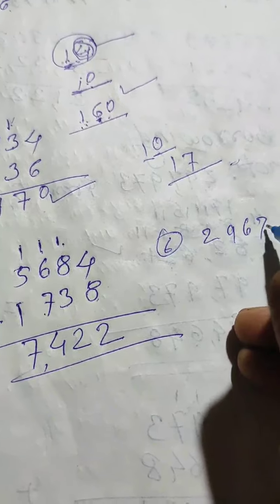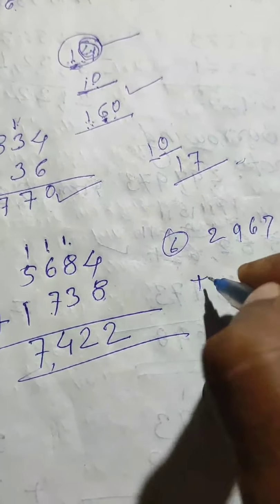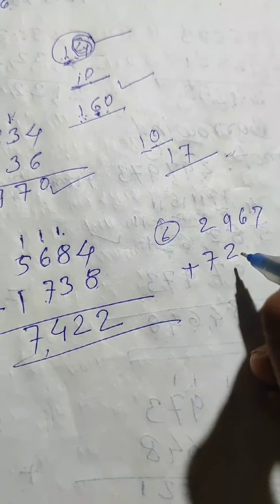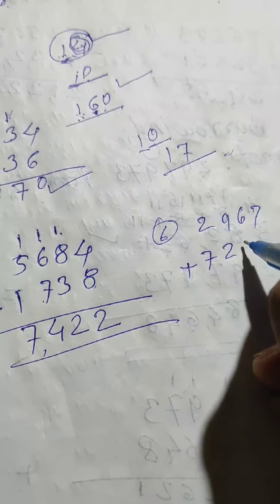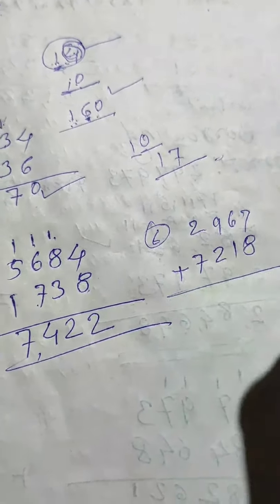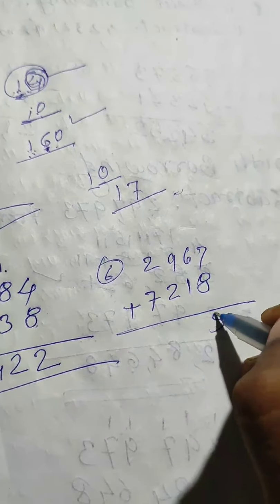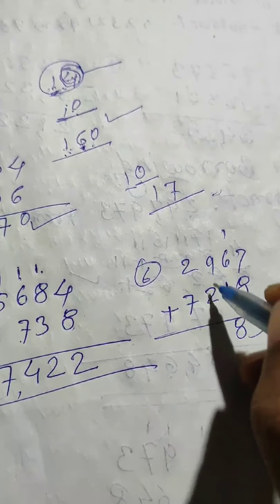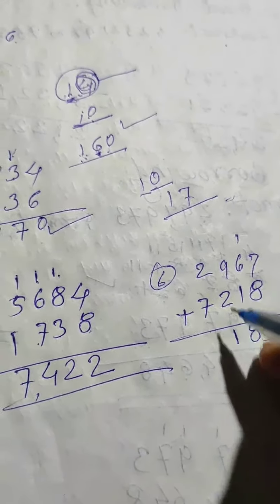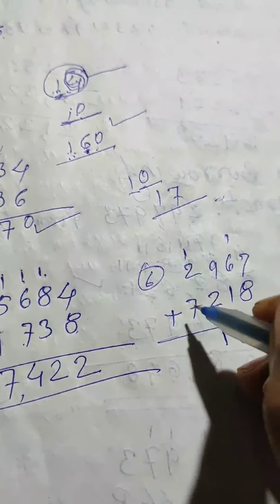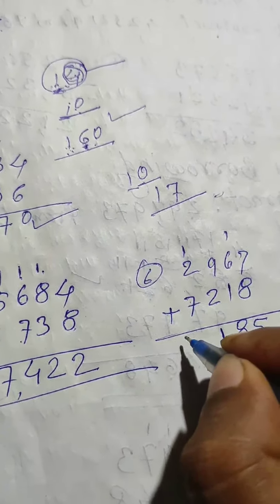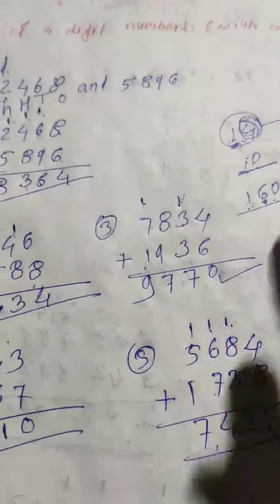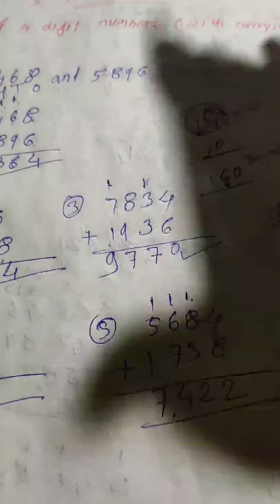Next example: two thousand nine hundred sixty seven plus seven thousand two hundred eighteen. Eight plus seven is fifteen, carry one. Six plus two is eight, nine plus two is eleven, carry one. Then seven plus three is ten - answer is ten thousand one hundred eighty five. This is how we solve these examples.